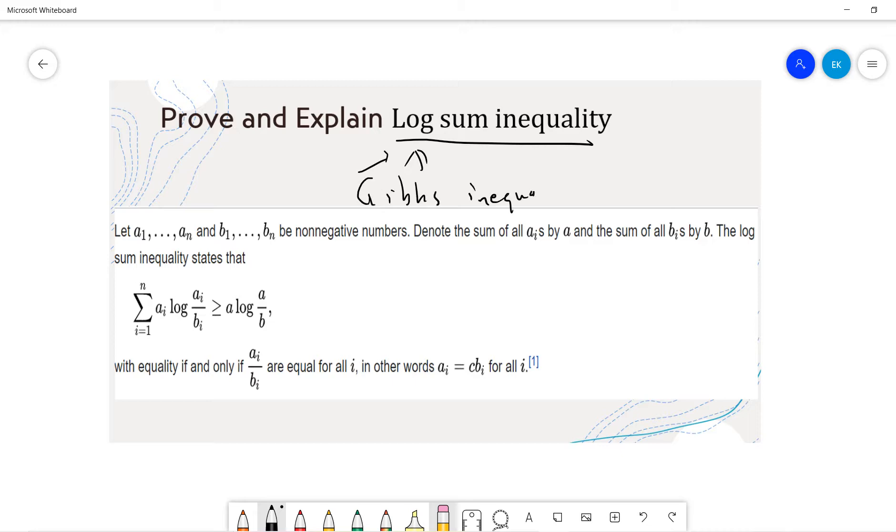So if you don't know about Gibbs inequality, then I will put a link below that you guys can check. Basically, it's related to the KL divergence, I mean, the information theory if you are interested.